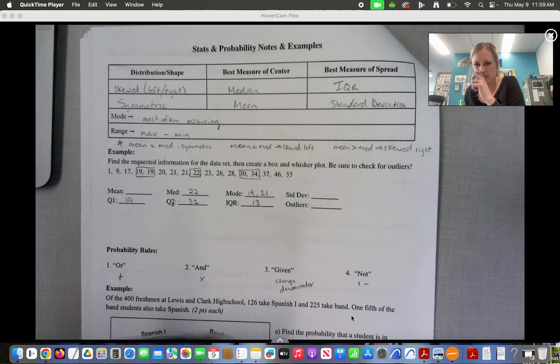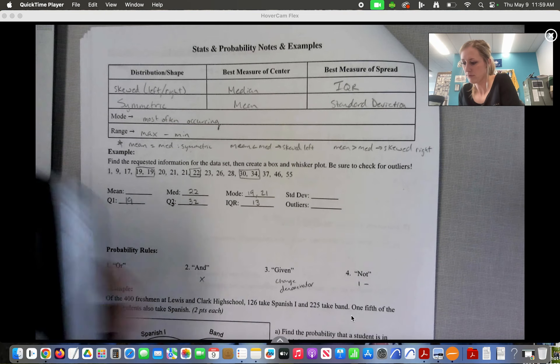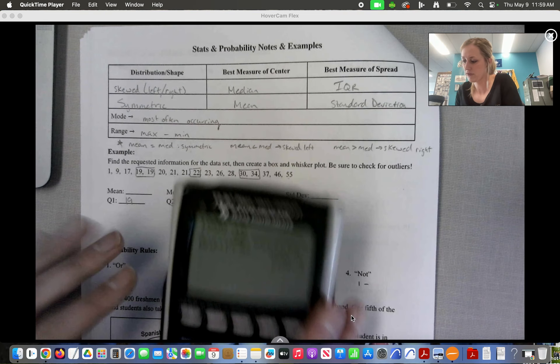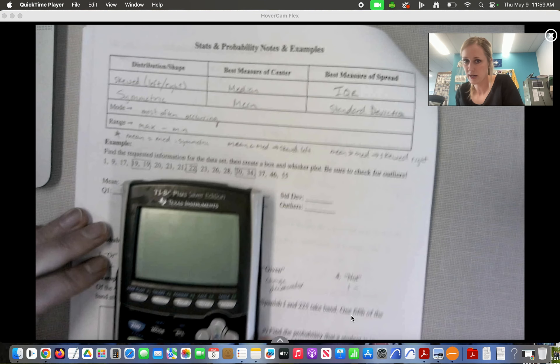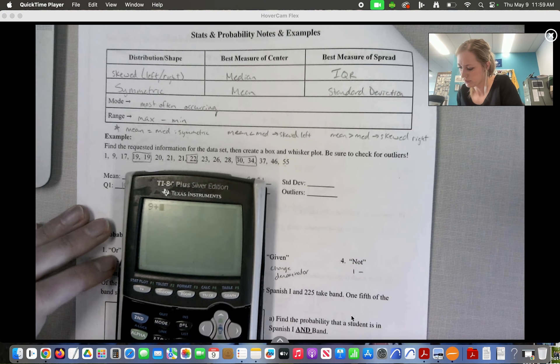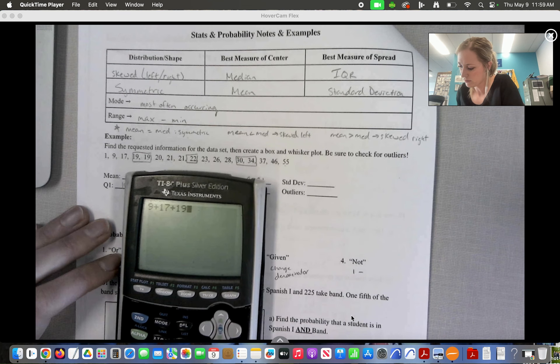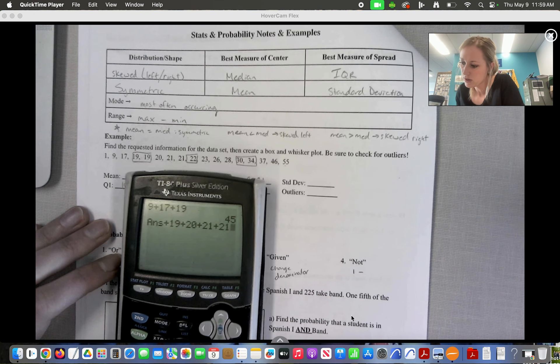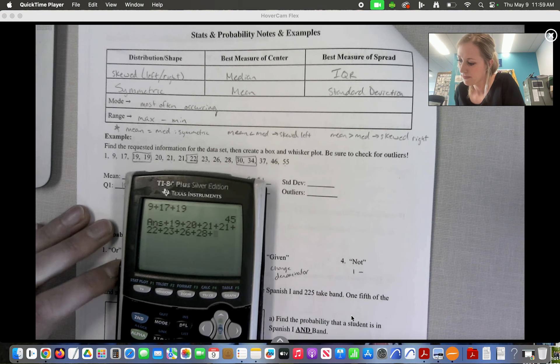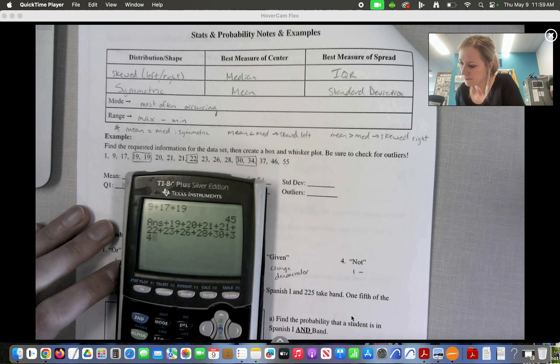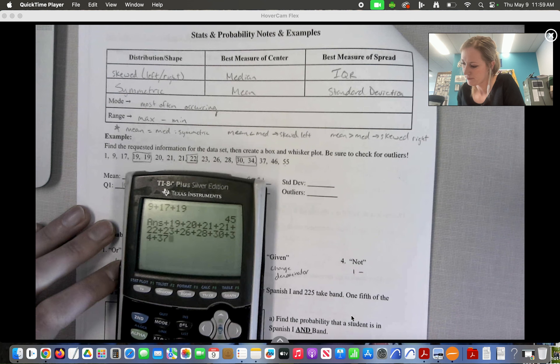Mean is we're going to add all these numbers up and divide by 17. So if I do that, we have 9 plus 17 plus 19 plus 19 plus 20 plus 21 plus 21 plus 22 plus 23, 23, 26, 28, 30, 34, 37, 46, 55.